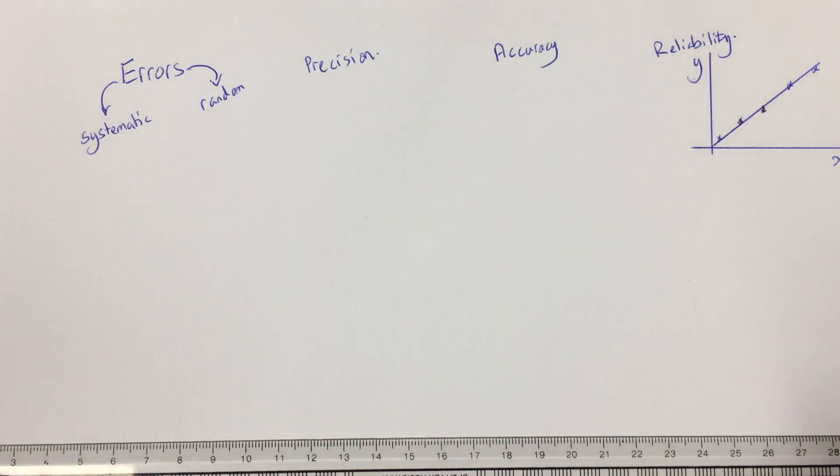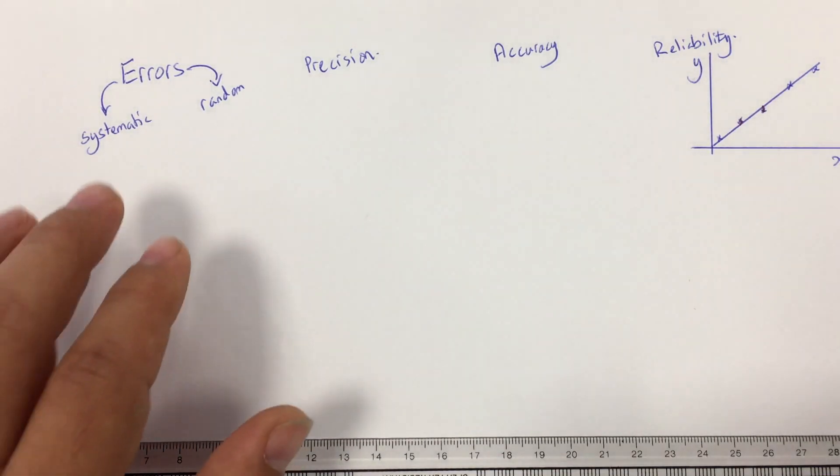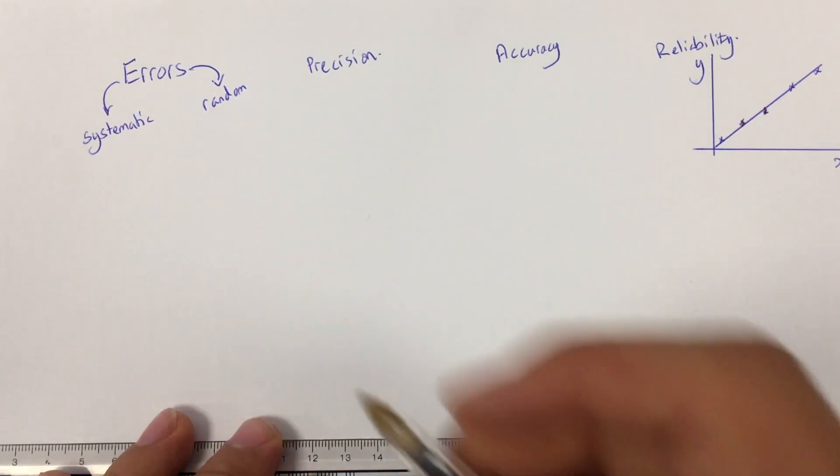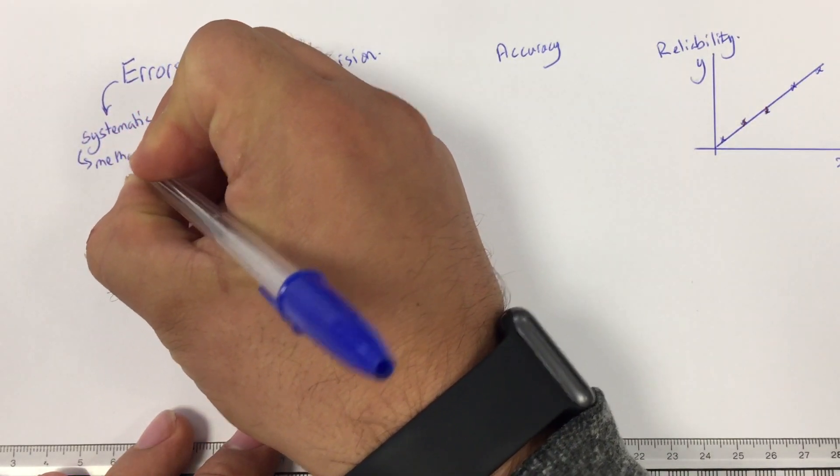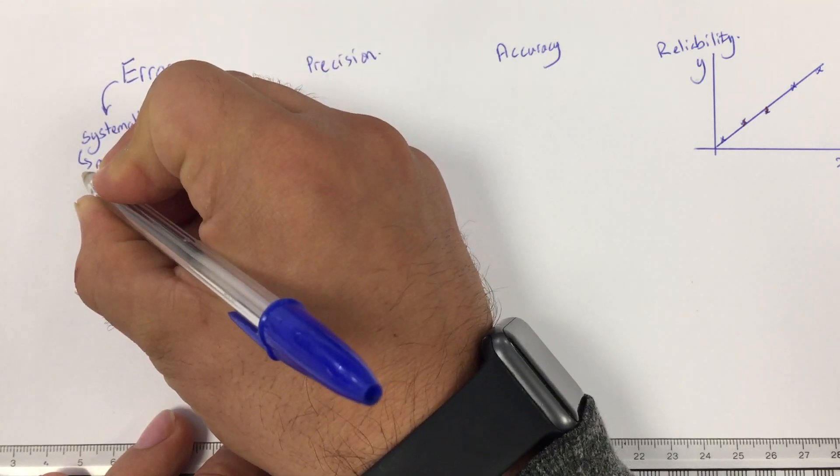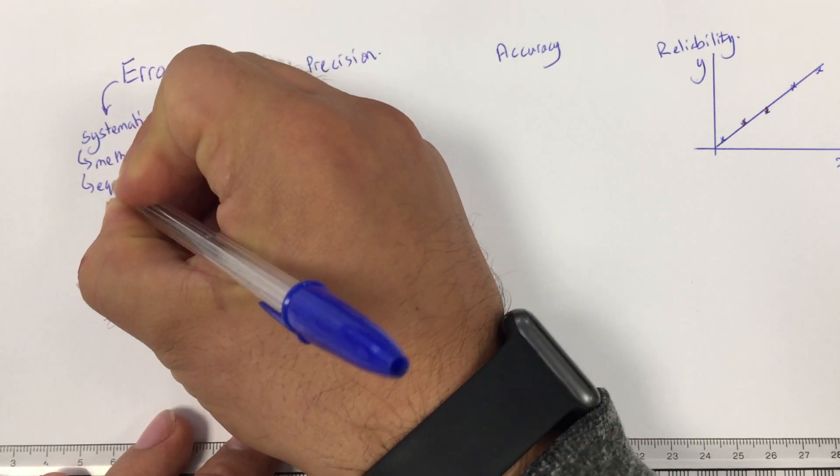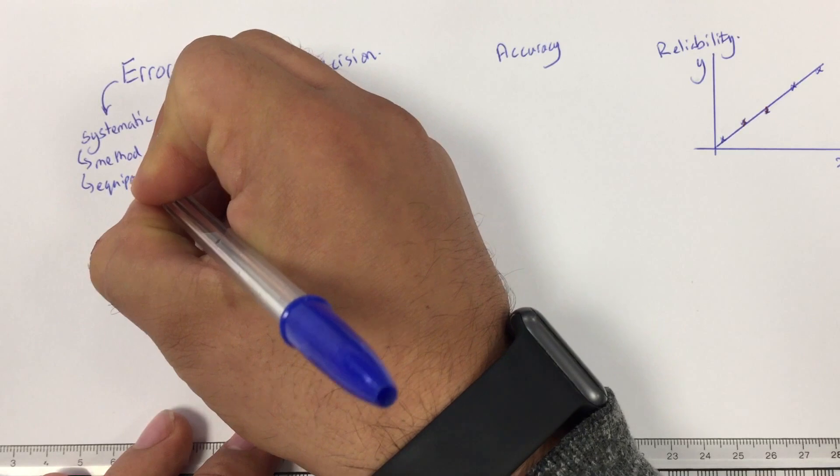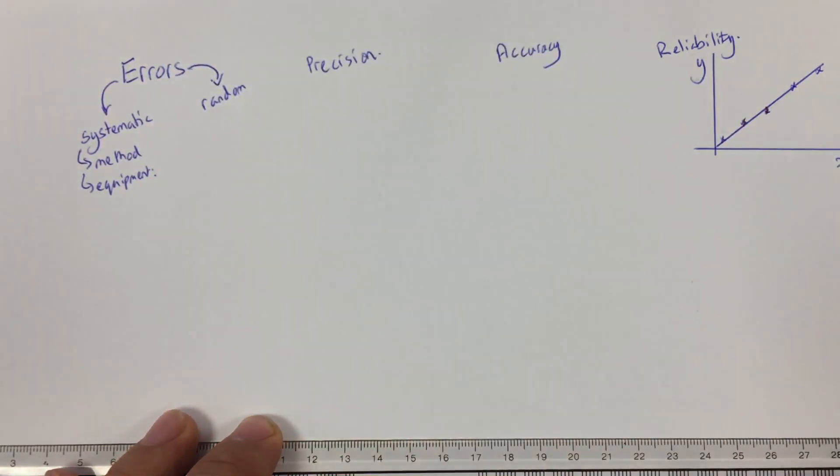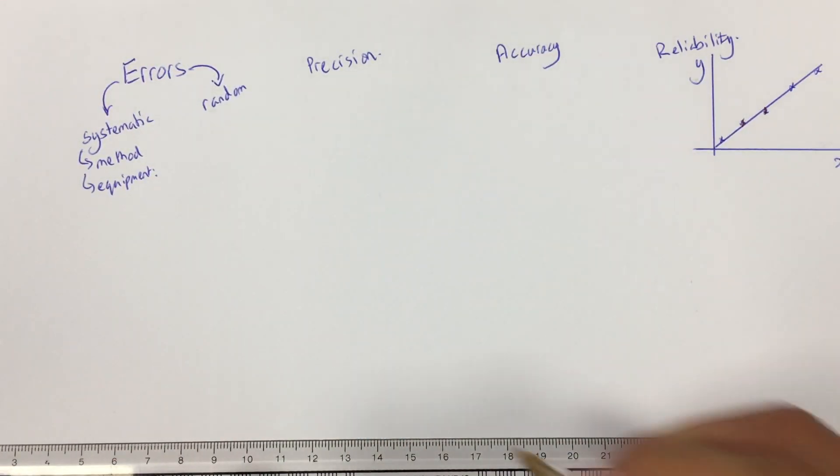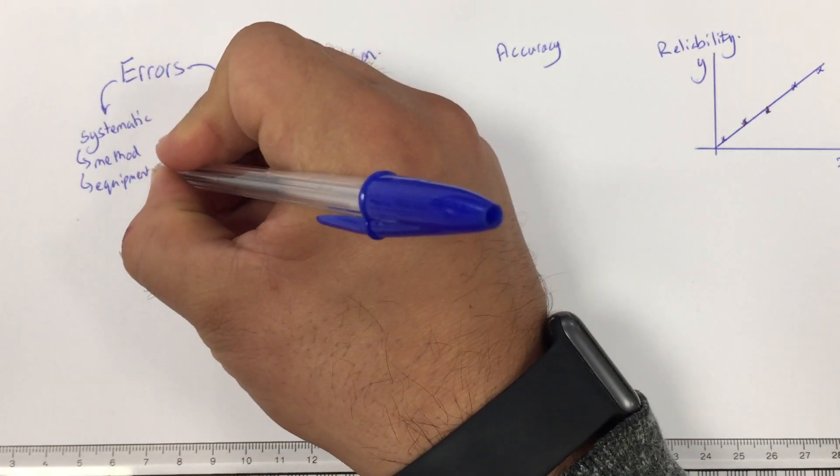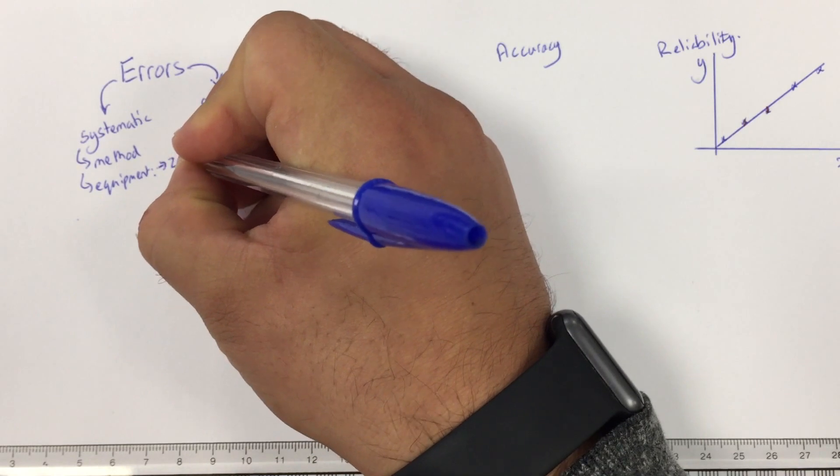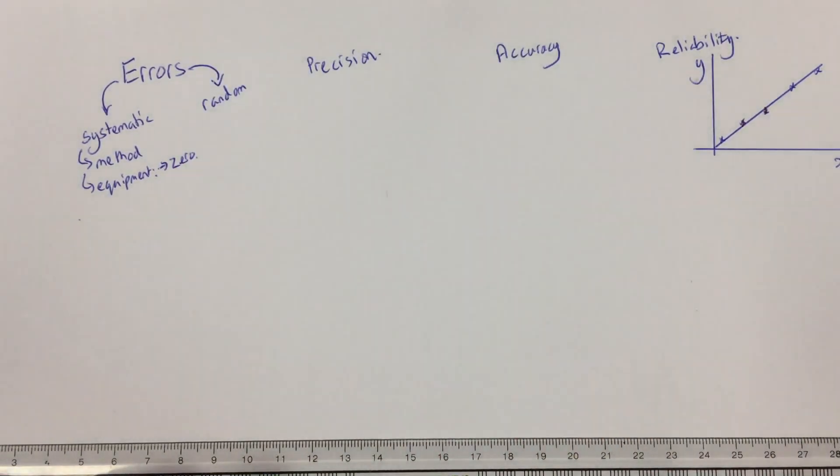Now, systematic error happens as a result of either the method that we're using, or because of the limitations within our equipment. So it's always limitations in one of these two areas, equipment or method, that causes systematic error. One specific example of systematic error that is, in terms of our equipment, might be a zero error.